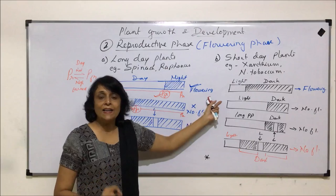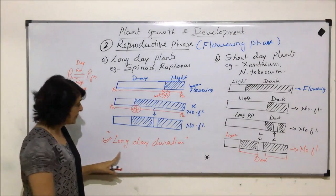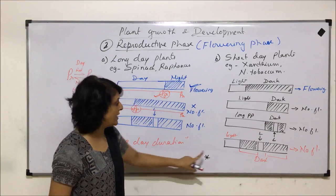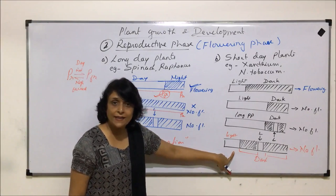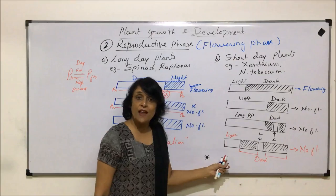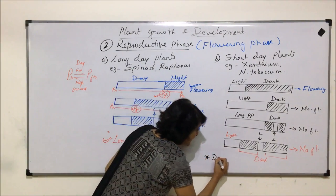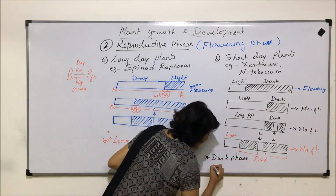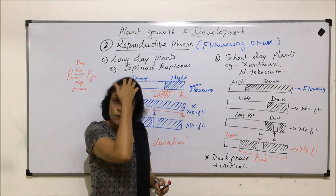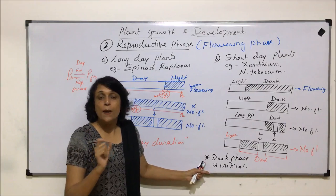For short day plants to flower, it is the night period or dark period which is critical. We saw that in long day plants it was the day duration which decided flowering. But in short day plants, even with a simple short day — if the dark period is interrupted — it does not flower. The reason is that for short day plants, the dark phase is critical. That means for flowering to take place, they require a long, uninterrupted dark period.